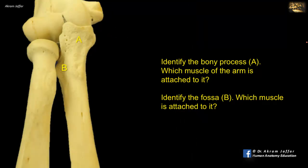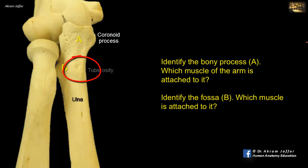Identify the bony process A, which muscle of the arm is attached to it, and identify the fossa B, which muscle is attached to it. The process A is located at the proximal end of the ulna — it is the coronoid process. Note the rough area on the coronoid process; this is the tuberosity of the ulna, and it is produced by the attachment of brachialis muscle.